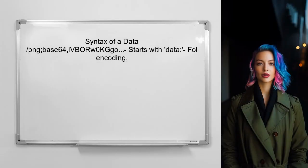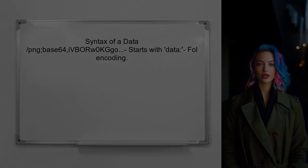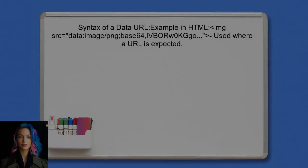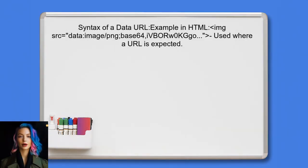Next, let's look at the syntax. A data URI typically starts with the prefix 'data', followed by the media type, and then the actual data. For example, an image might look like this: data:image/png;base64,iVBORw0KGgo. In contrast, a data URL also starts with 'data', but it is often used in contexts where a URL is expected, such as in an image source attribute. You can use it directly in HTML like this: img src="data:image/png;base64,iVBORw0KGgo".